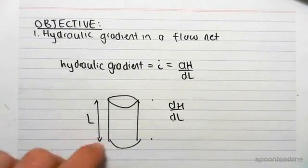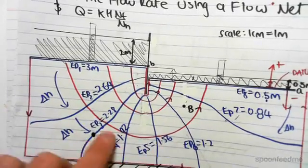But for a flow net, it's not so simple. We don't have such simple shapes. We've got these curved linear squares, and we've got funny stuff going on.